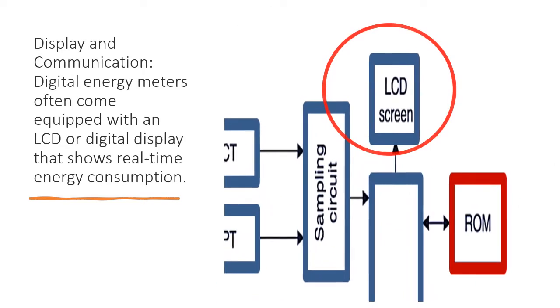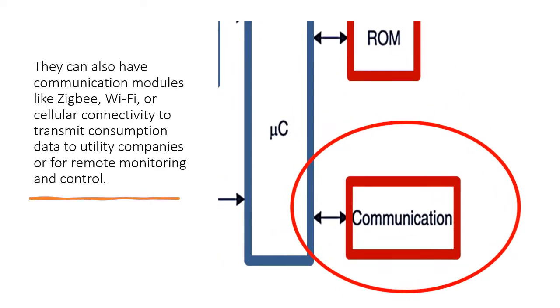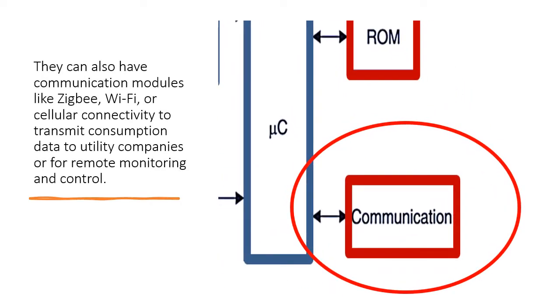Digital energy meters often come equipped with an LCD or digital display that shows real-time energy consumption. They can also have communication modules like Zigbee, Wi-Fi, or cellular connectivity to transmit consumption data to utility companies or for remote monitoring and control.